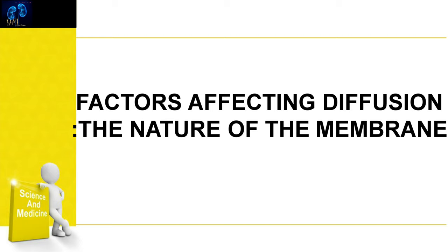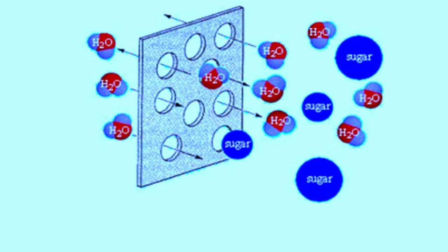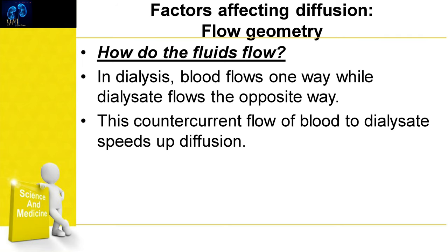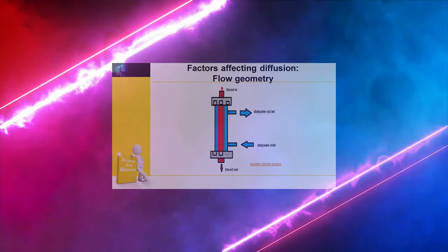Next we discuss factors affecting diffusion by the nature of the membrane. The first factor is membrane permeability. Membranes with more pores allow faster diffusion, and larger pores allow larger molecules to pass through. A larger surface area also allows more diffusion.